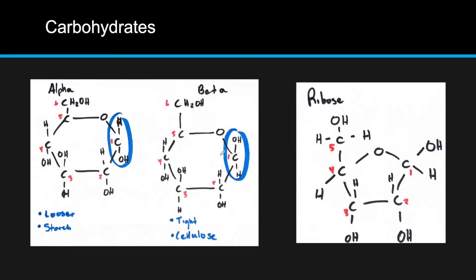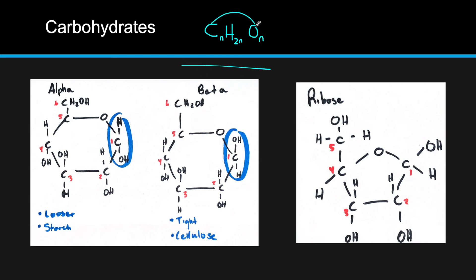Carbohydrates are the first category — these are what we know as sugars, starches, cellulose. All these different molecules contain formulas similar to CH2O, so basically CnH2nOn. What you're going to be looking for is either a ring or a linear molecule, where the carbons and oxygens are roughly equal in number, and the hydrogens are usually double the carbon count.